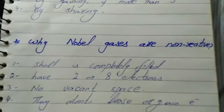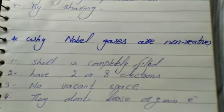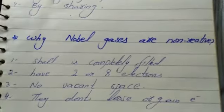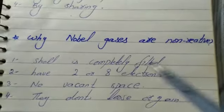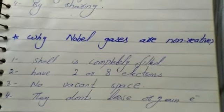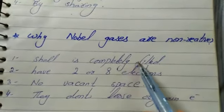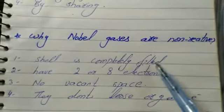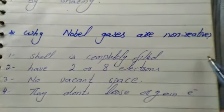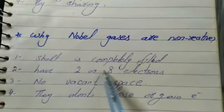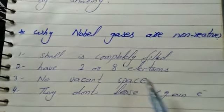Noble gases are non-reactive because their outer shell is completely filled — they have 2 or 8 electrons in the outer shell. There is no need for them to take or give electrons. They already have no vacant space in which another electron can enter, and they do not lose or gain electrons.